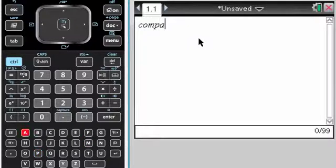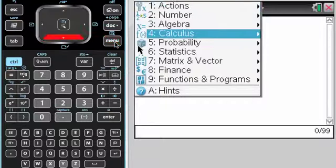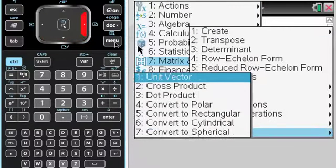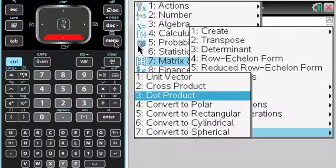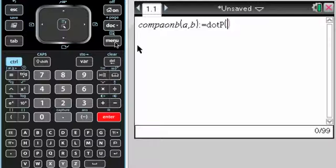So what I'm going to do is define a function called component of A on B, and it's going to take two vectors as its inputs. So what I need to do now is set it up. It's the dot product of A along B, so it's the dot product of A with a unit vector in the direction of B.